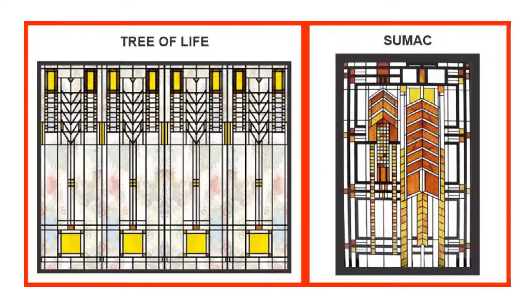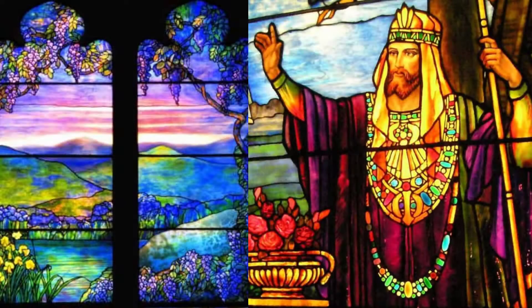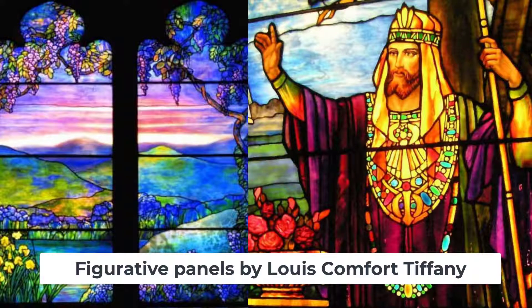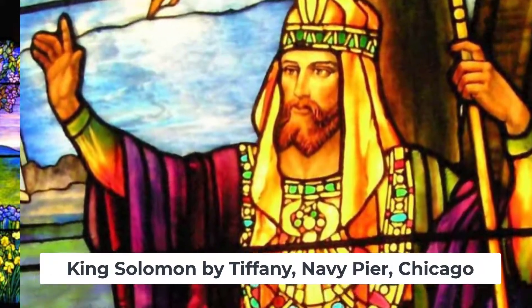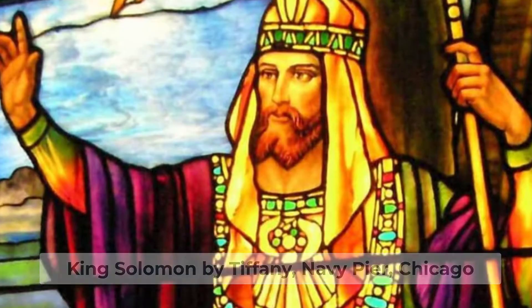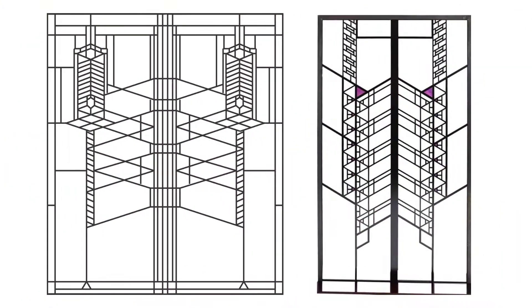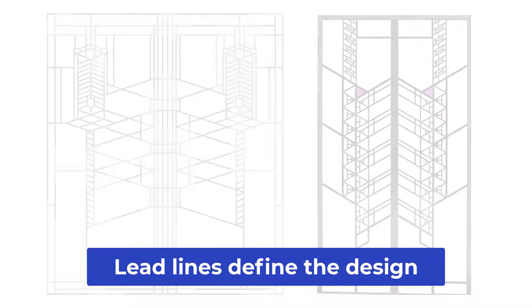Frank Lloyd Wright's influence on stained glass can hardly be exaggerated. Earlier windows by classic U.S. designers like Tiffany and Lafarge were exclusively figurative — expressionist landscapes and romantic neo-Gothic representations of saints and mythical figures. Design by Frank Lloyd Wright was instantly transformed into rectilinear patterns, largely using his T-square, where crucially the lead lines, or lead came, rather than being an inconvenience, became the essence of the design.